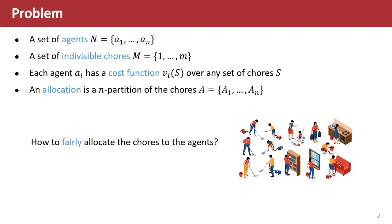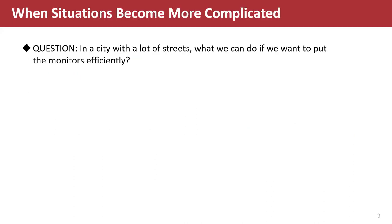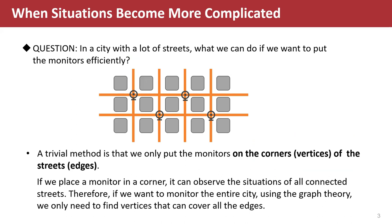This paper is about how to fairly allocate the chores to agents. Let's think about a simple problem in our daily life. In a city with a lot of streets, what can we do if we want to put the monitors efficiently? A trivial method is that we only put the monitors on the corners of the streets, or we put the monitors on the vertices of the edges.